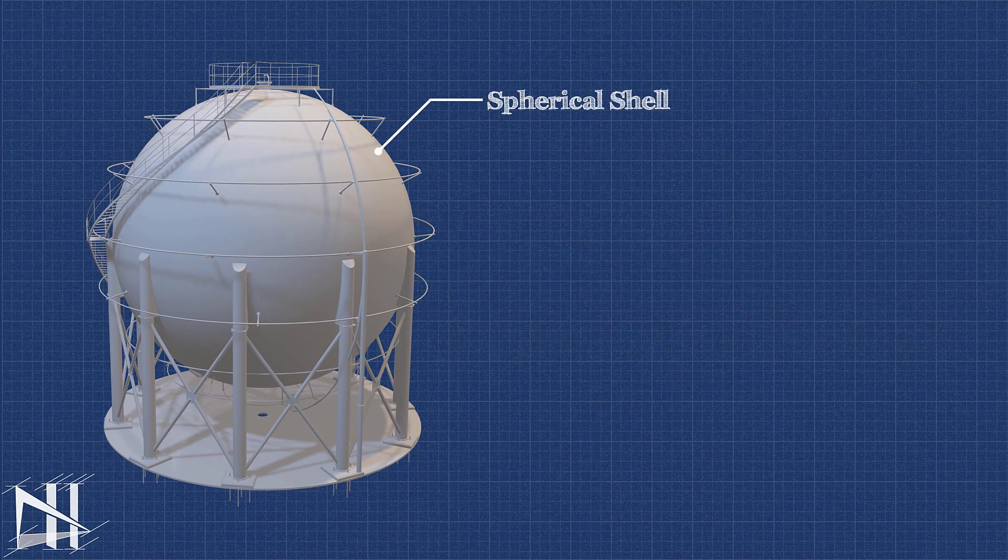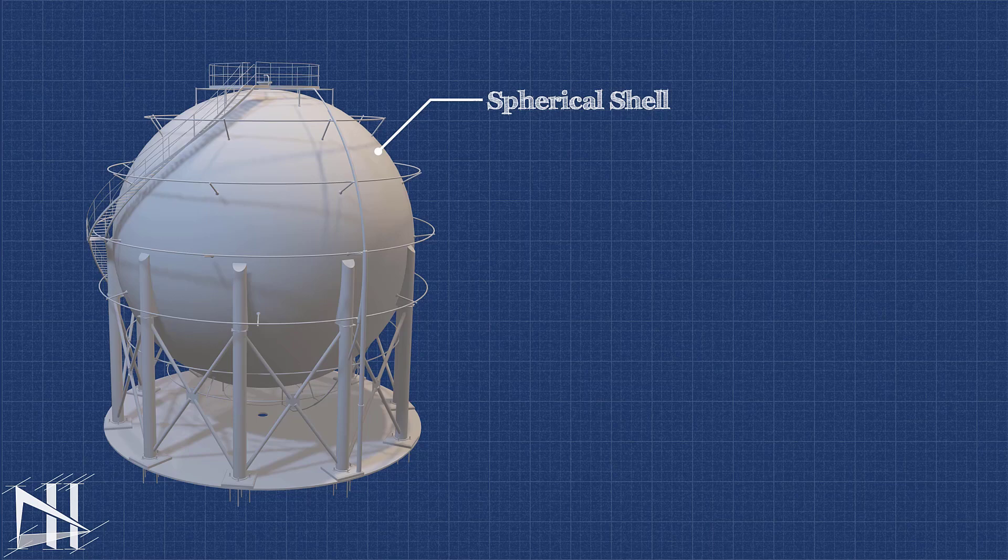The spherical shell is the main body of the tank. It is made of a strong material to withstand high-pressure loads. This shell thickness is calculated by ASME Division 1 or 2.